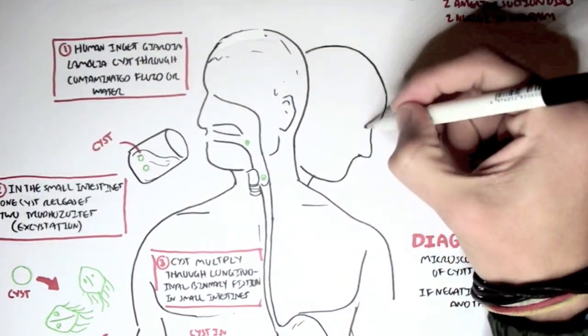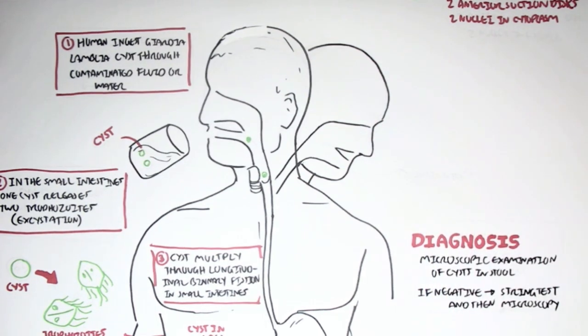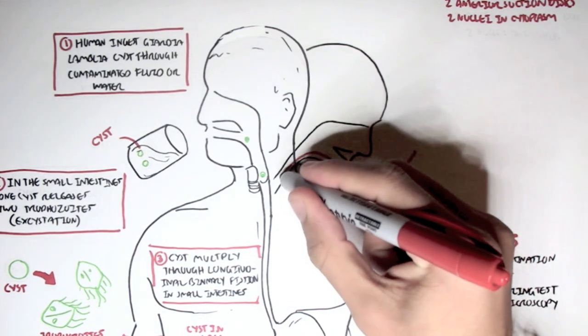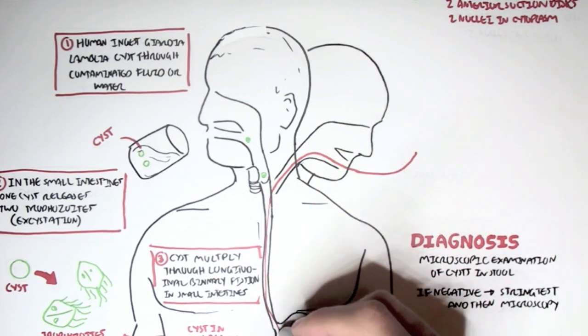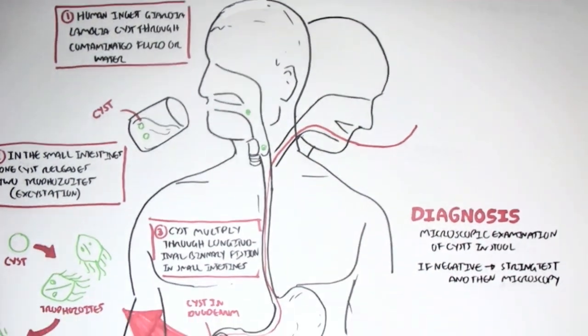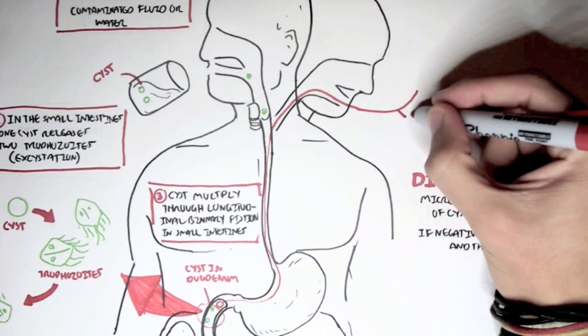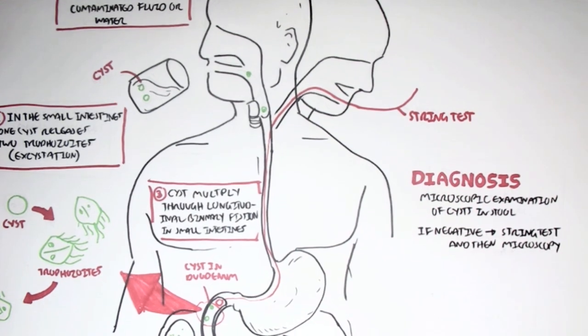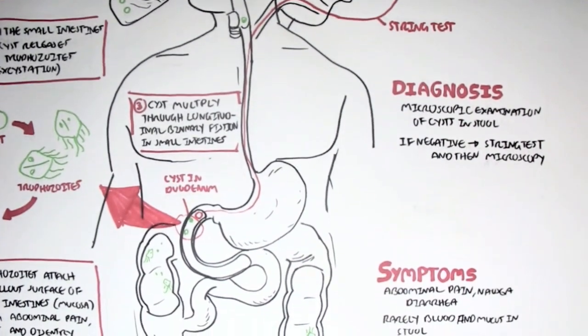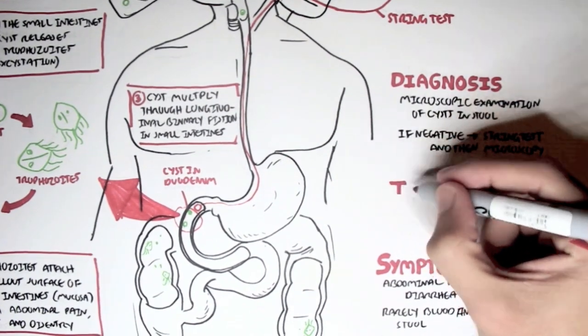String test is essentially when we put a string inside this human that we suspect is suffering from Giardiasis. This string will travel down through the gastrointestinal tract, and essentially we will take a sample from the mucus layer of the small intestines here. And then from this specimen collection, we can use microscopy to identify if there is a trophozoite or a cyst here.